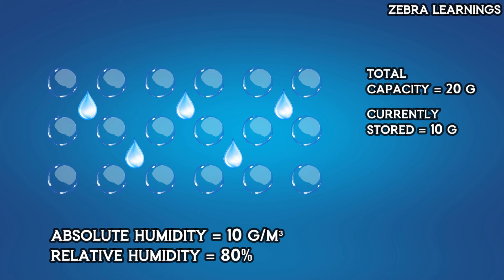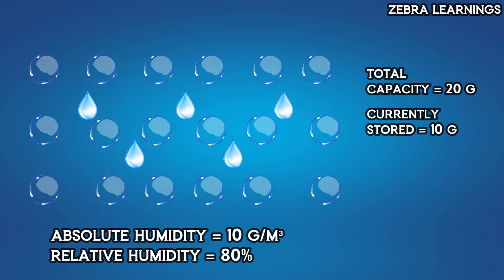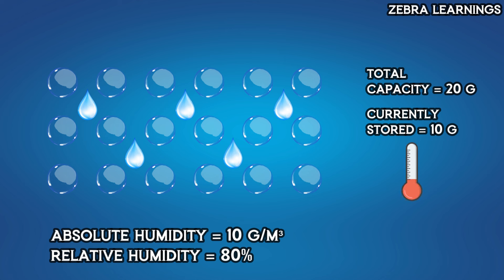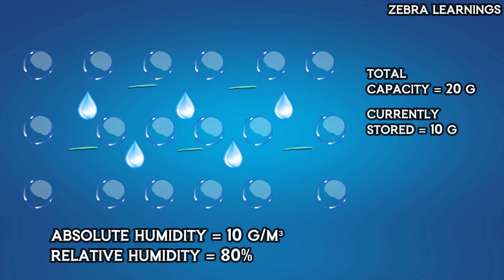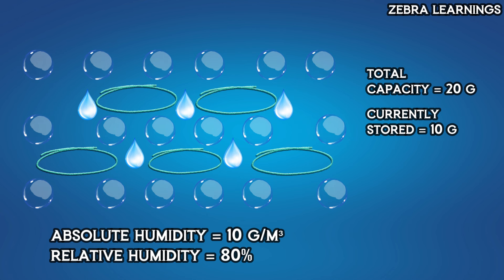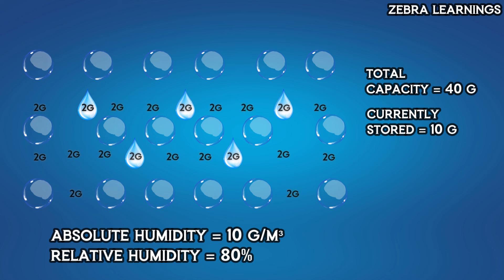Air has a property: when air is heated, it expands, and when it is cooled, it contracts. Now let's increase the temperature of this air. When the temperature increases, all the air molecules expand. As they expand, more space is created within this area, so we can store more water vapor. After the air expands, the area that could previously store up to 20 grams of water vapor can now store up to 40 grams of water vapor.